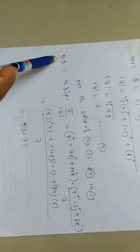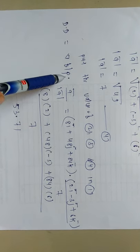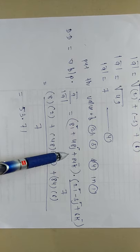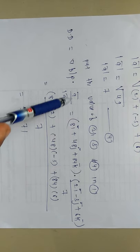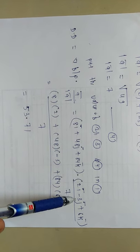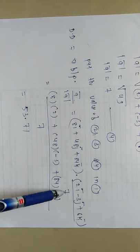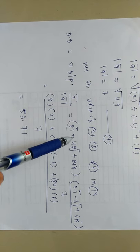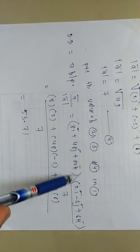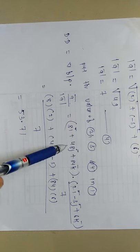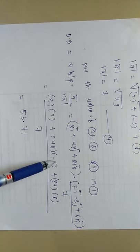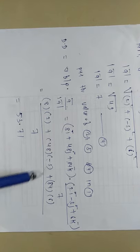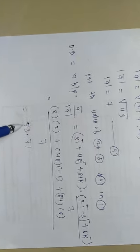Now we put all values into the directional derivative formula. D equals del f at point P dot a-bar divided by mod of a-bar. That is (8i plus 48j plus 84k) dot (2i minus 3j plus 6k), all divided by 7. Performing the dot product: (8×2) plus (48×(-3)) plus (84×6), divided by 7. After simplifying, the directional derivative equals 53.71.